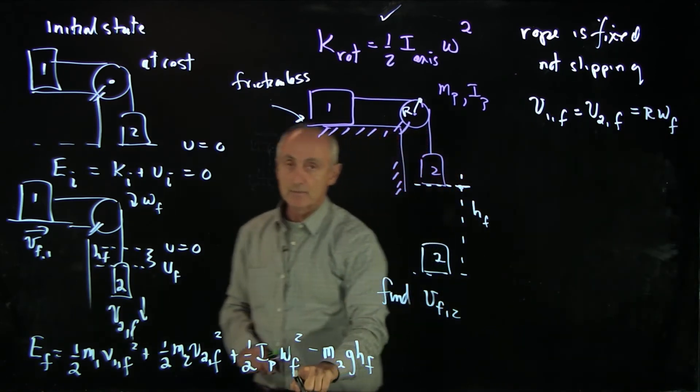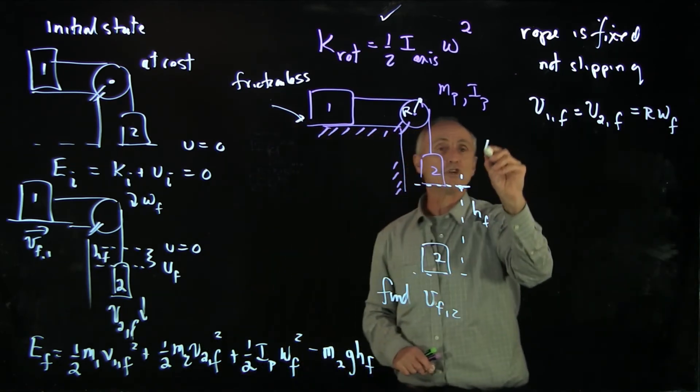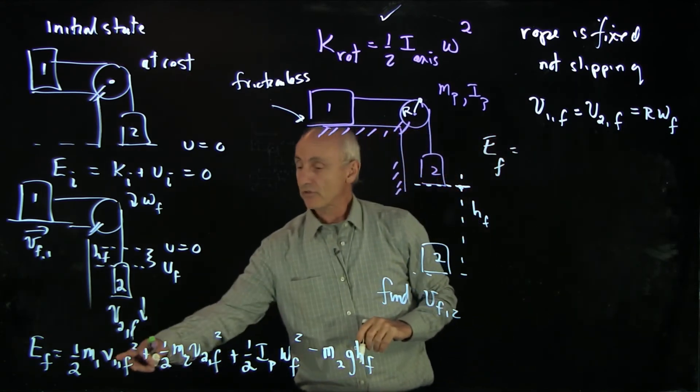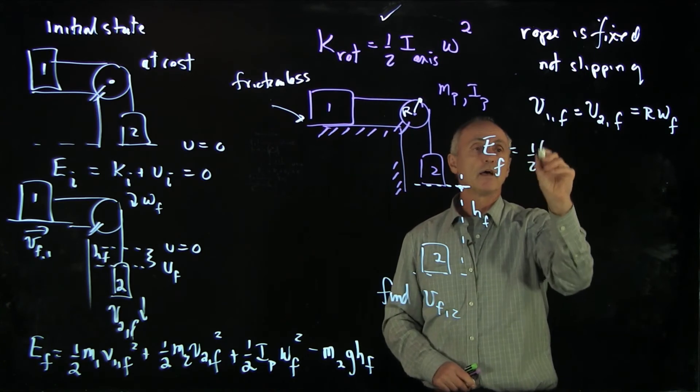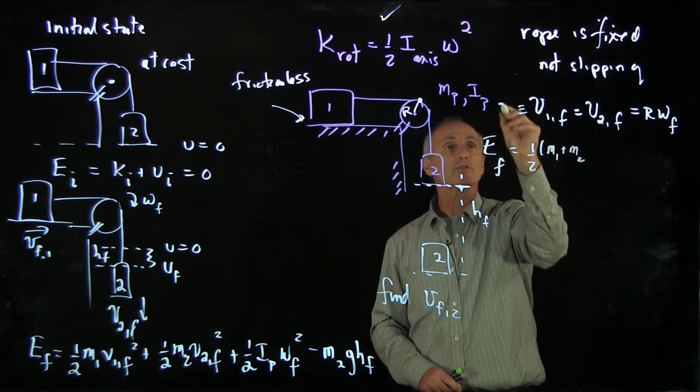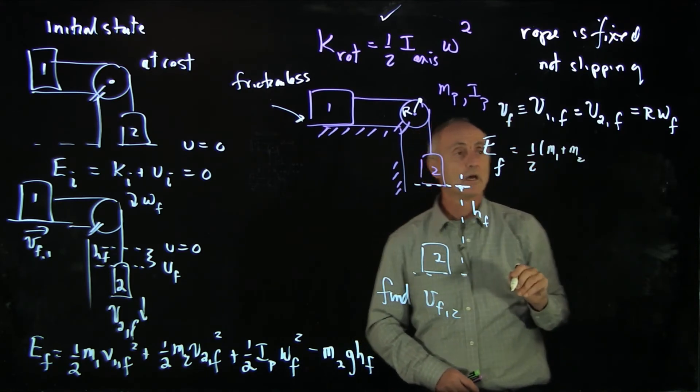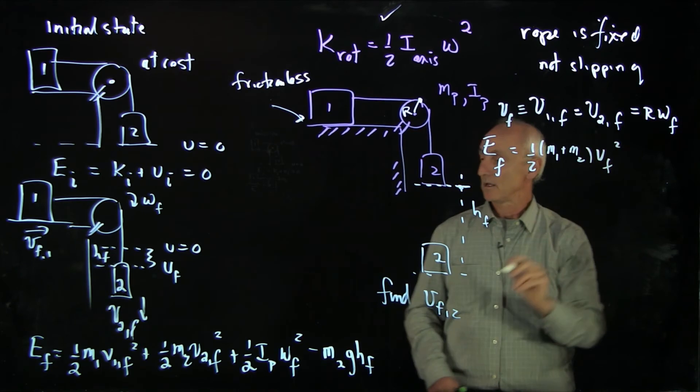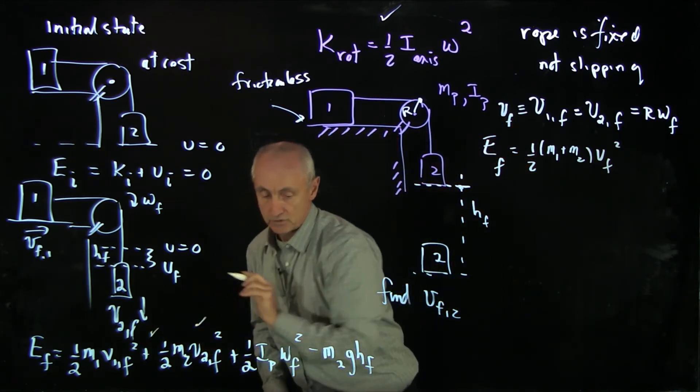That makes our final energy, let's now gather terms. The velocities are the same, so we have 1 half m1 plus m2, and we'll just call this v final for simplicity, times v final squared. That accounts for these two terms.